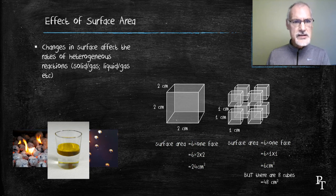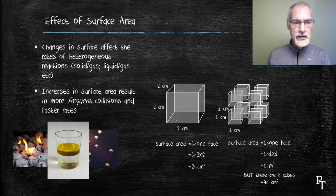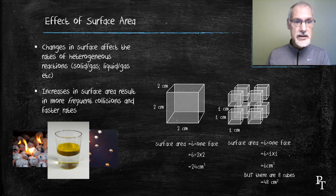I've essentially doubled the surface area, and as a result, doubled the opportunity for oxygen to collide with my piece of coal or carbon. So generally speaking, increases in the surface area of heterogeneous systems will result in more frequent collisions and increases in the rate of reaction.